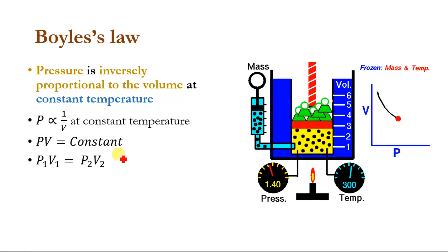According to Boyle's law, the pressure is inversely proportional to the volume at constant temperature. As you see in this diagram, if we keep the temperature constant, then the volume of this gas is inversely proportional to the pressure. When we increase the pressure, the volume of this gas decreases.